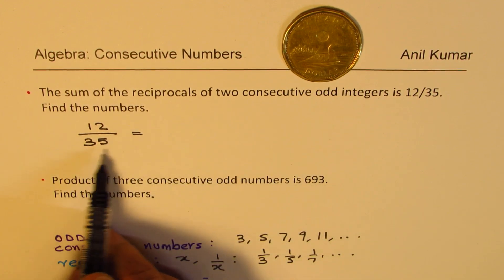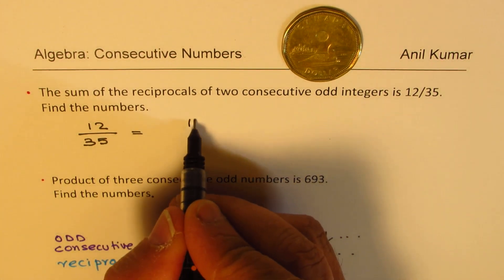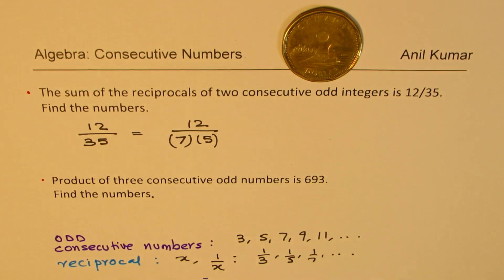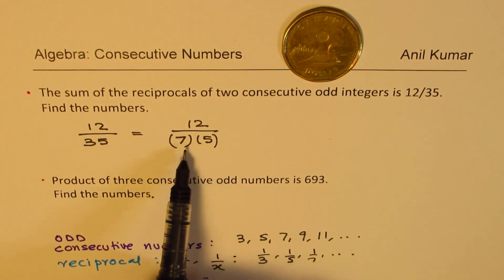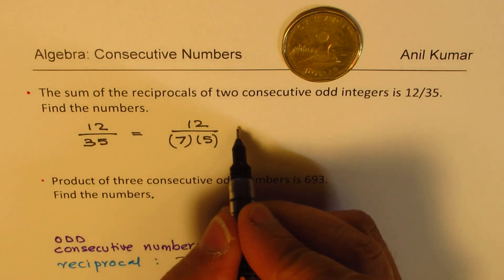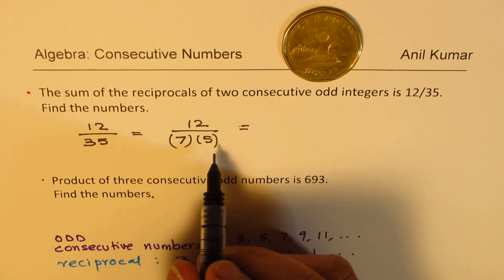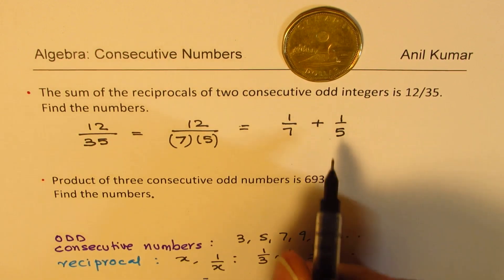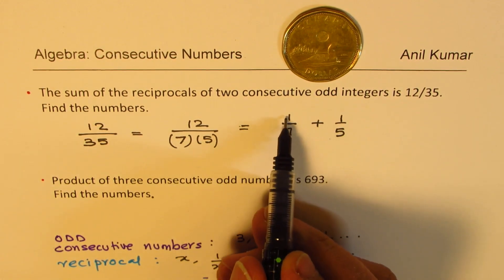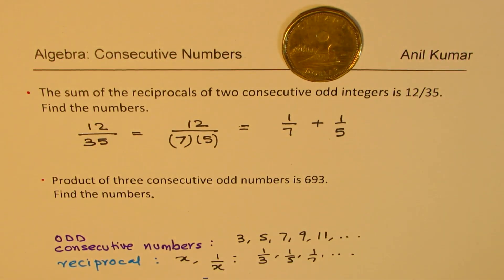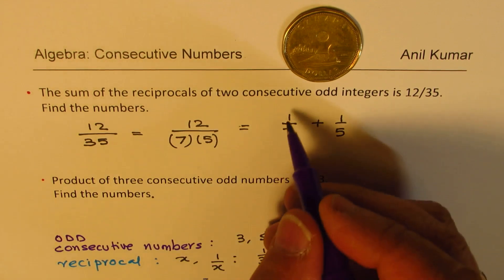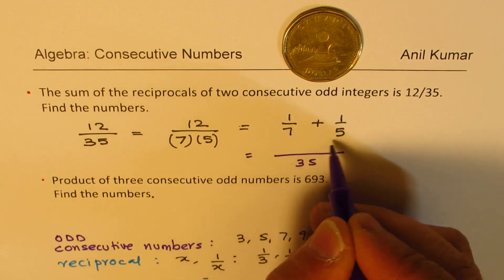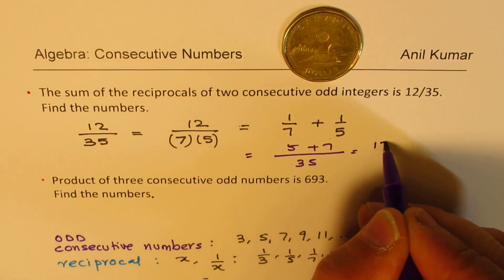Now, 35 could be written as product of what? 7 times 5. So we could write this as 12 over 7 times 5 and that gives me 35 and we also understand that 7 and 5 are consecutive odd integers. So if you have to look into this, you could think that we are talking about something which is 1 over 7 plus 1 over 5. So that actually gives you 12. 5 times 1 and 7 times 1, cross multiply. And if you want to work on this, 1 over 7 plus 1 over 5, common denominator is 35. And what we get here is 5 plus 7, which is 12 over 35.